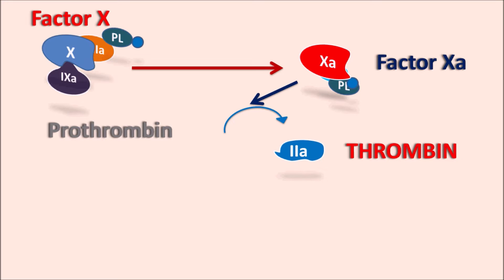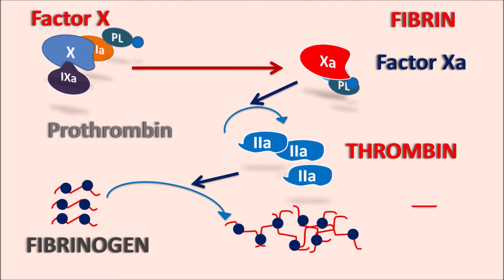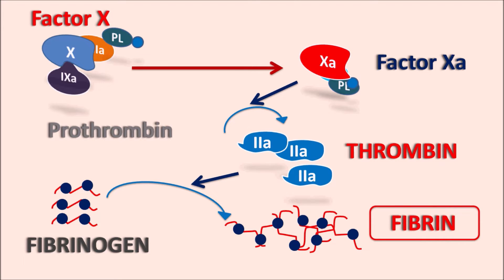As prothrombin binds to Factor Xa, it is converted to Factor 2a, releasing a large amount of thrombin, which is responsible for converting fibrinogen into the fibrin mesh. This fibrin mesh, along with platelets, arrests blood flow. Normally this clot formed by fibrin arrests bleeding after tissue damage, but in pathological conditions like DVT, pulmonary embolism, post-surgical complications, or viral infections like COVID-19, excessive clotting occurs without tissue damage, producing stroke and death.